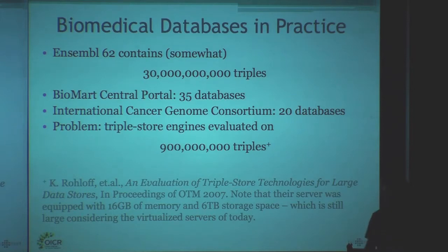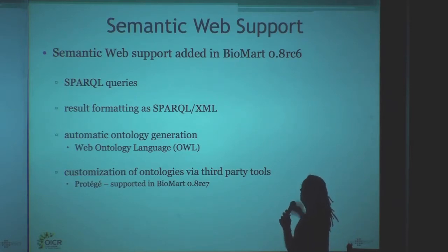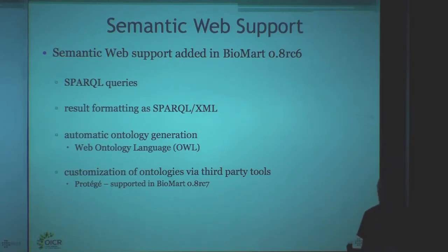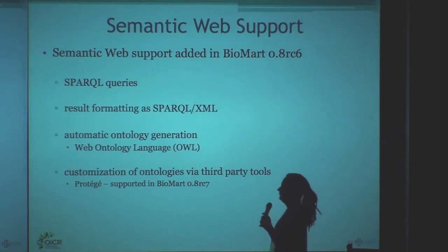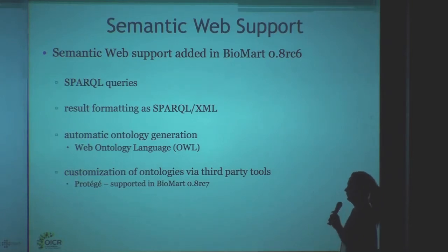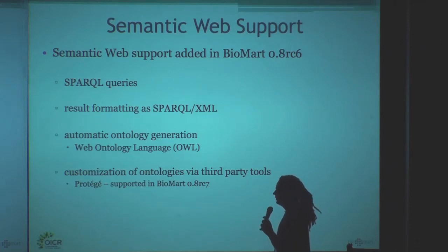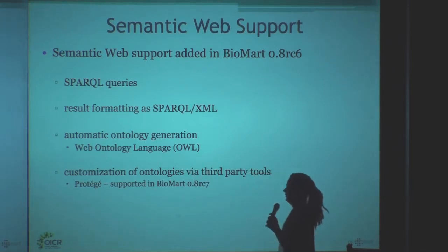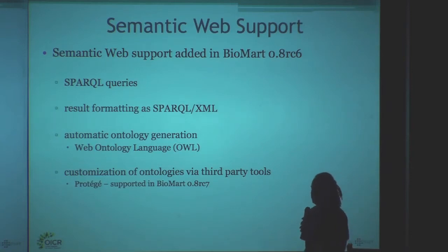BioMart can actually access these really huge databases and does query optimizations. In BioMart 0.8 — a new release, release candidate 6 — we introduced SPARQL queries: very basic SPARQL queries, and we return the result as SPARQL XML, which is basically what the W3C defines as the default data return format. For all the databases in our central portal and also in the ICGC portal, we allow automatic ontology generation, which generates a Web Ontology Language (OWL) ontology automatically for you. It doesn't know the data structures in your database, but it's something you can start from. With the RC7 version of BioMart, it actually allows you to customize this ontology and load it back in again.